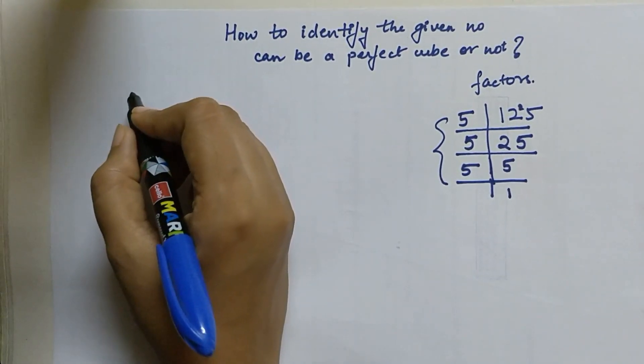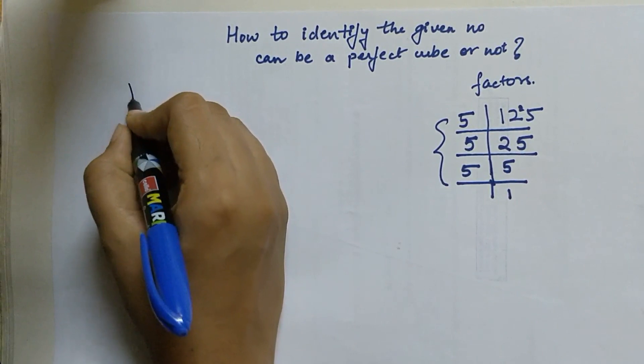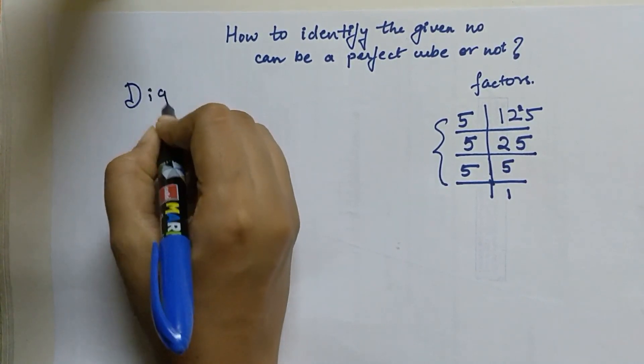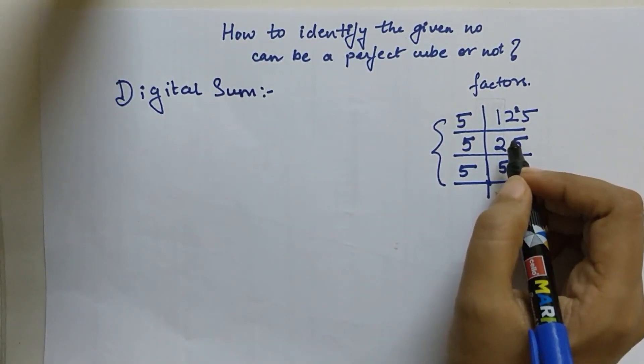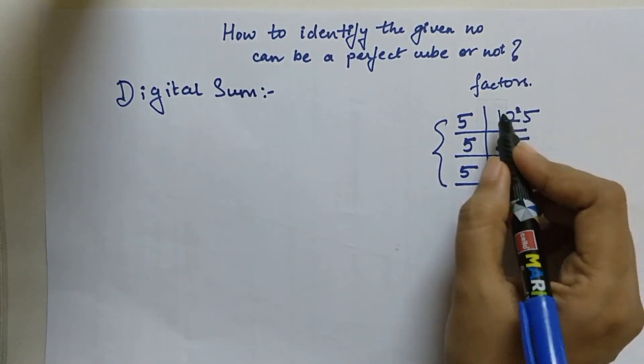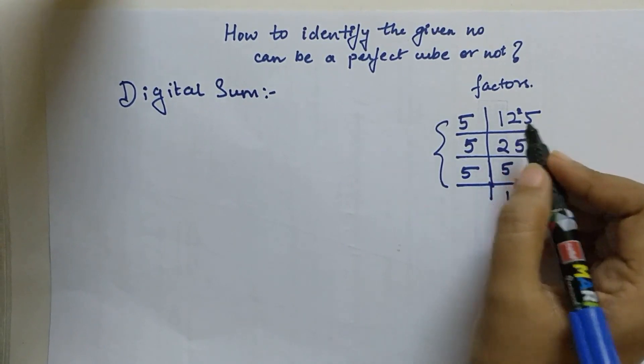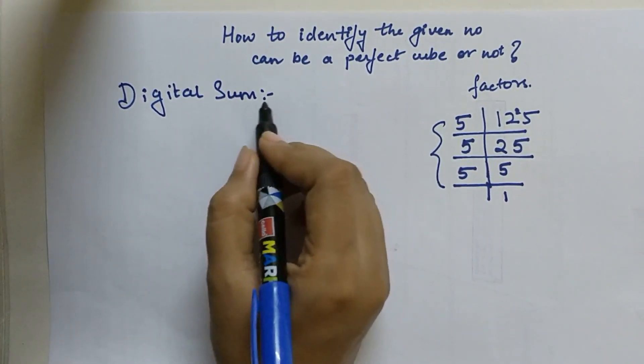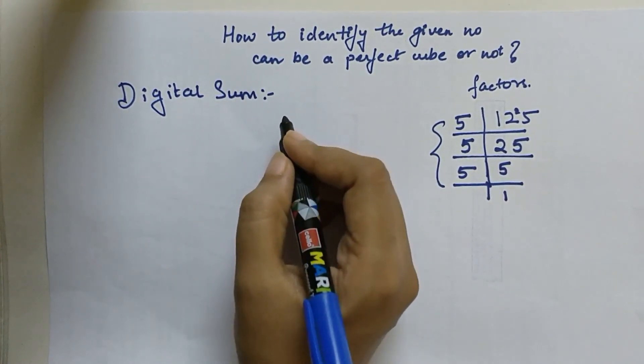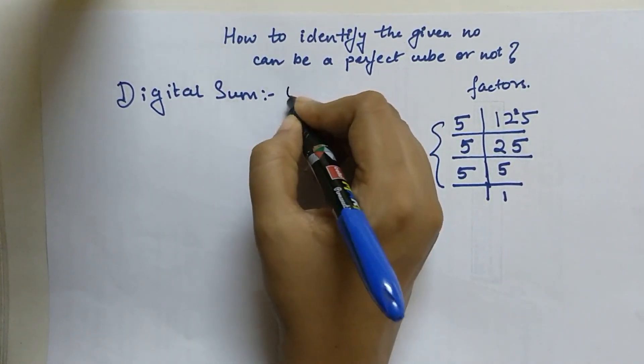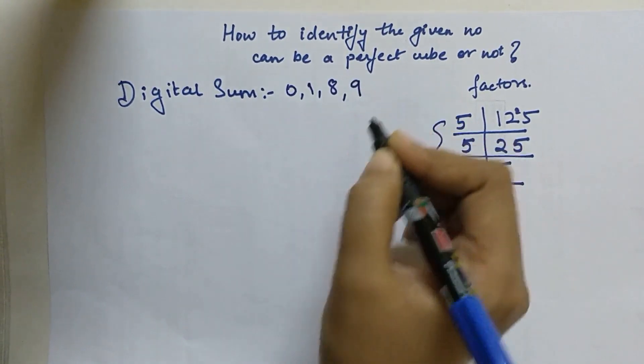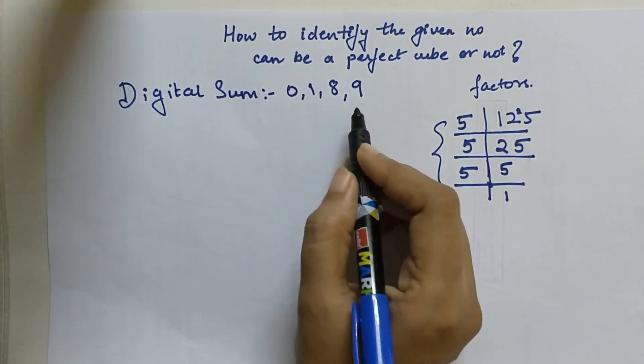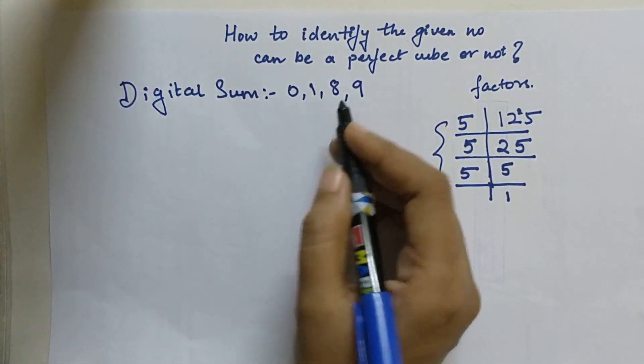Now students, for that the trick is to find the digital sum. What do you mean by digital sum? You will be adding all the digits in the given number. If the digital sum of your number comes as 0, 1, 8, or 9, only then we can say that the number can be a perfect cube.